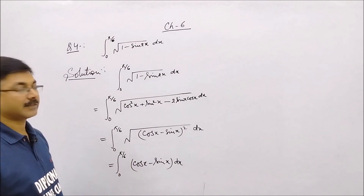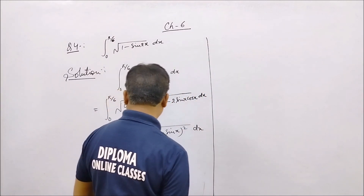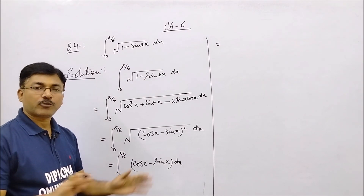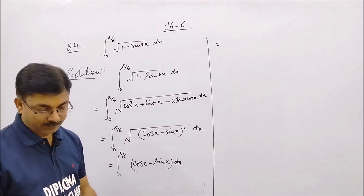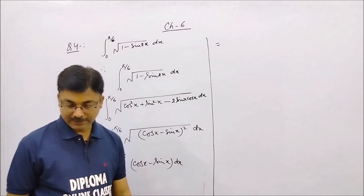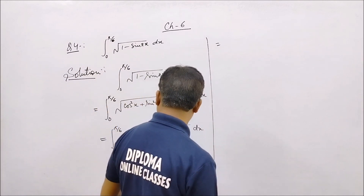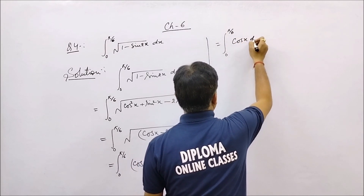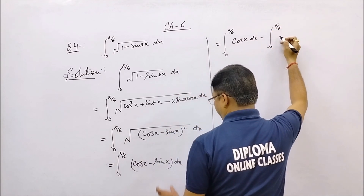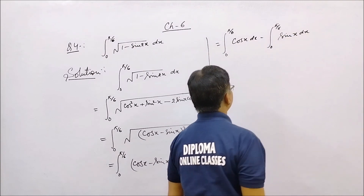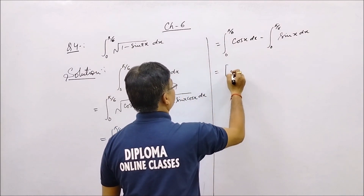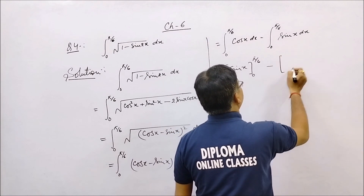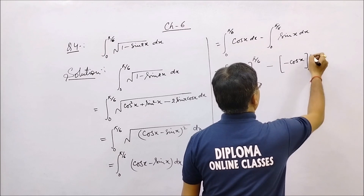This gives us the integral from 0 to pi by 6 of cosx dx minus the integral from 0 to pi by 6 of sinx dx. The integration of cosx is sinx evaluated from 0 to pi by 6, minus the integration of sinx which is minus cosx, evaluated from 0 to pi by 6.